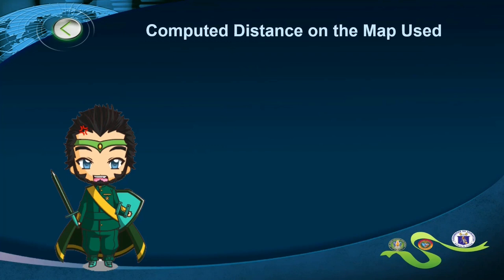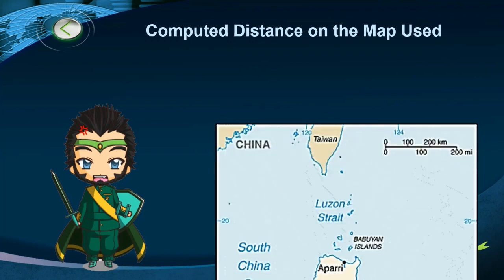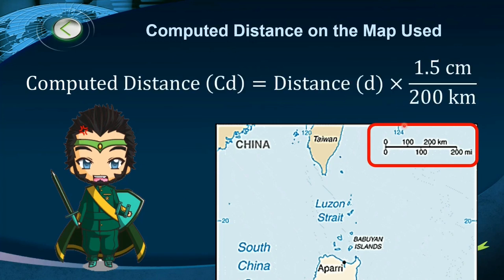On your map, to locate the epicenter based on the distances computed, we use a conversion formula. From the map's scale, every 200 kilometers is equivalent to approximately 1.5 centimeters on the ruler. So the computed distance equals the calculated distance multiplied by the conversion factor of 1.5 centimeters per 200 kilometers, allowing us to locate the epicenter on the map.